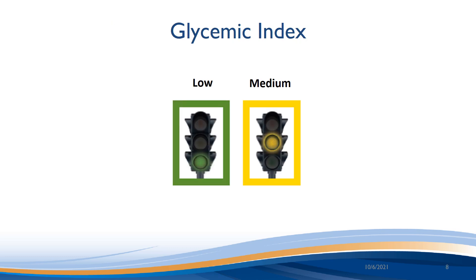Medium GI foods are foods we should choose less often, or proceed with caution. They include foods such as pita bread, rye bread, instant or quick oats, white rice, corn, or parsnips.